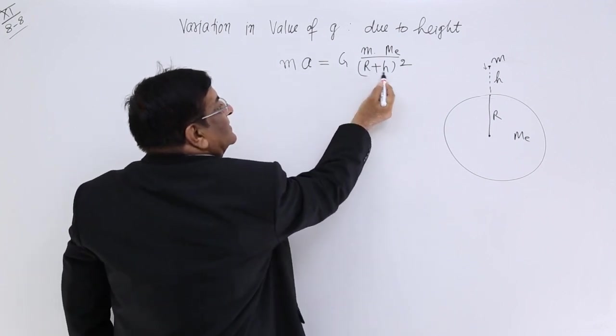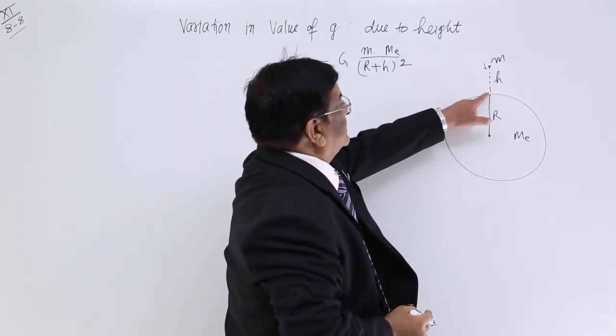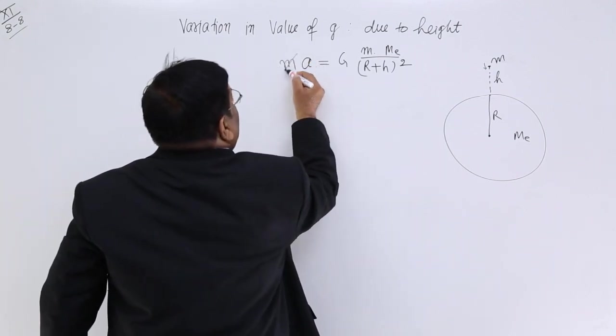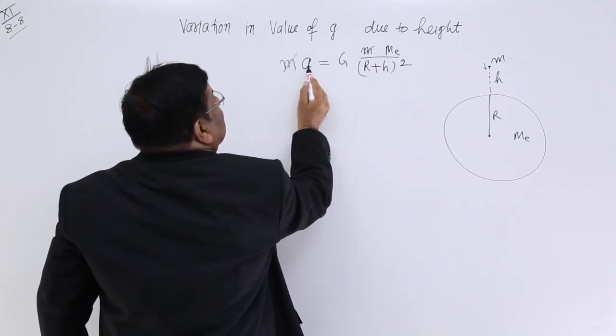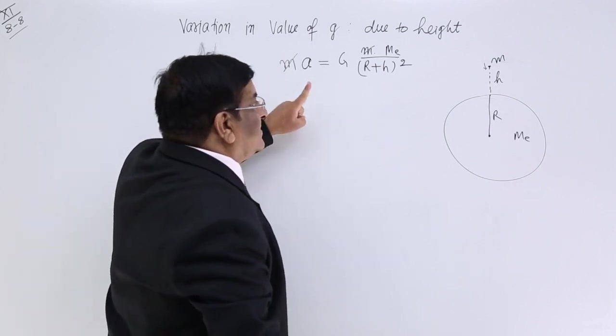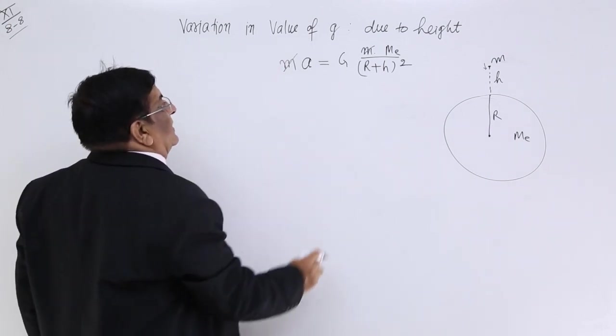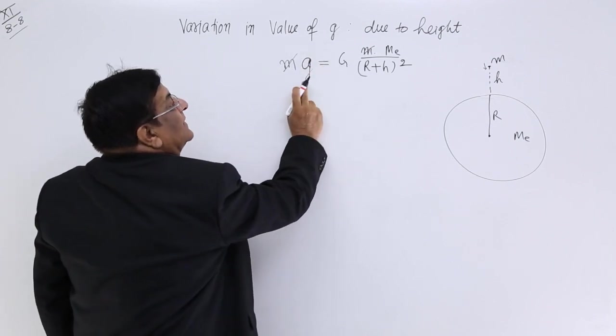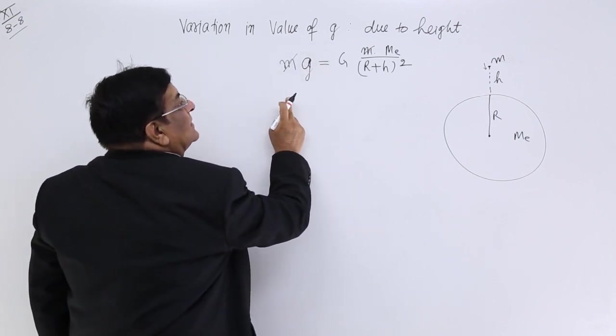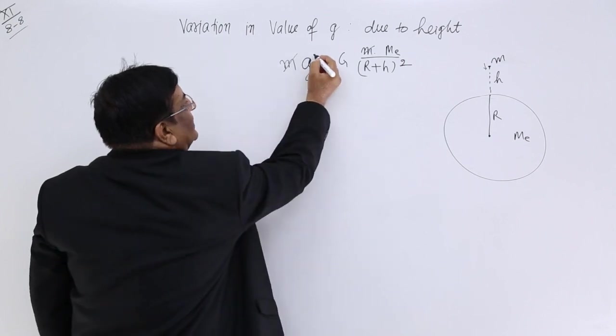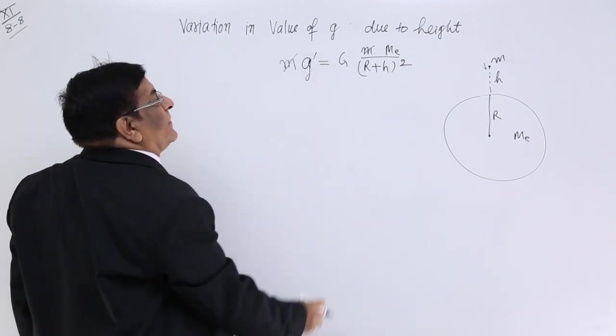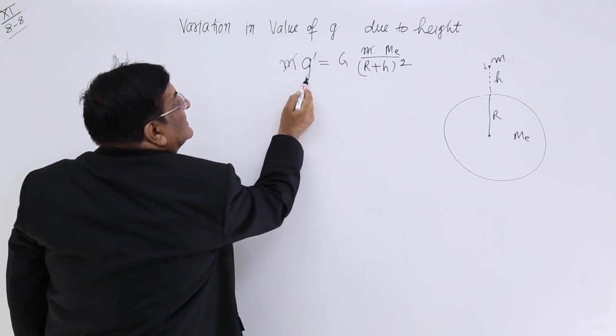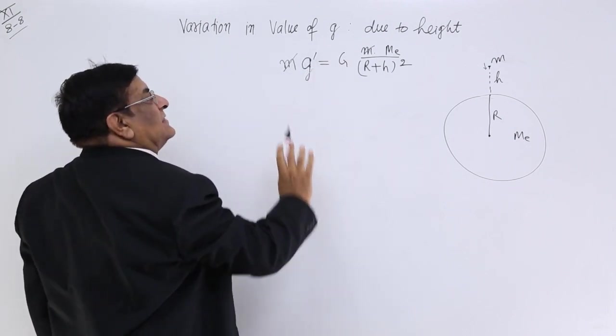What is this distance? Here is r, this is h. This is the one. So this is acceleration due to gravity. Because this is acceleration due to gravity, we will write it g. But this is not on the surface, so let us make a little change, g dash. So g dash, that is acceleration due to gravity at certain height.